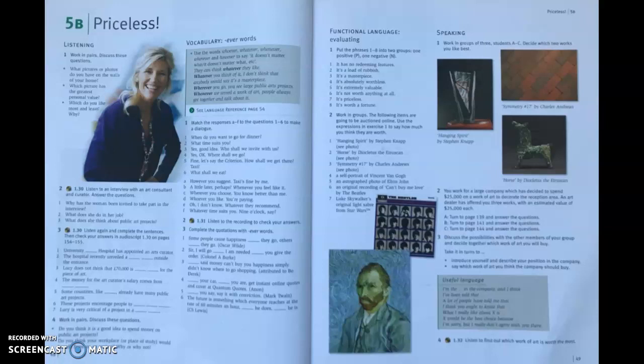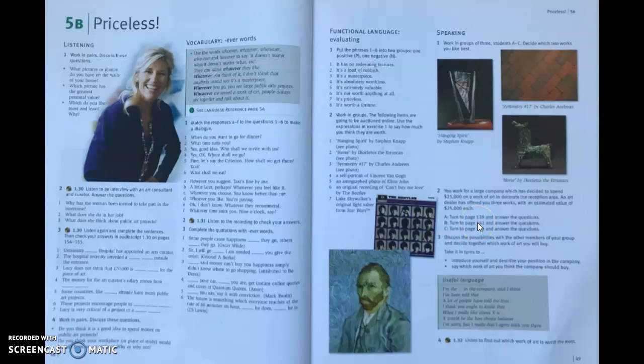This screencast is to support a lesson on words with 'ever' and some functional language for evaluating, on the topic of art. It's from Straightforward Upper Intermediate by P. Kerr and C. Jones, published by Macmillan. The lesson starts off with some discussion, then there's a listening, some work on the vocabulary, then on the functional language, finishing with a discussion around art.